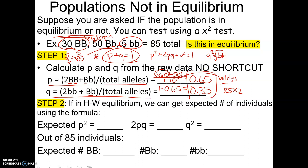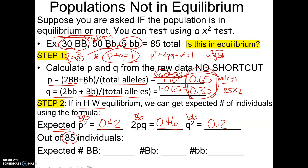Now we have our P and Q. If the population is in Hardy-Weinberg equilibrium, P squared gives the frequency of big B big B, 2PQ gives big B little b, and Q squared gives little b little b. So I'll fill in what I would expect if the population were in Hardy-Weinberg equilibrium: P squared equals 0.42, 2PQ equals 0.46, Q squared equals 0.12. Out of 85 individuals, we need to figure out how many individuals those frequencies represent.